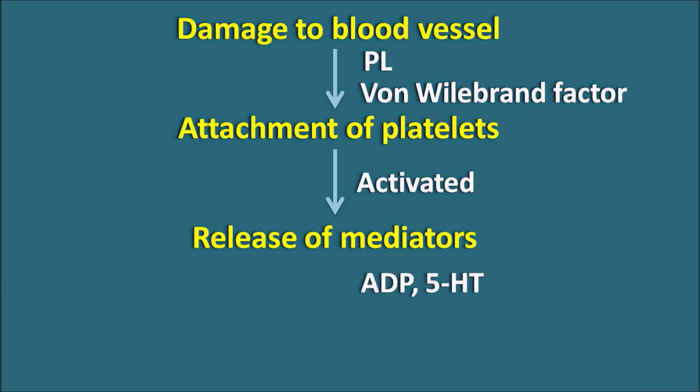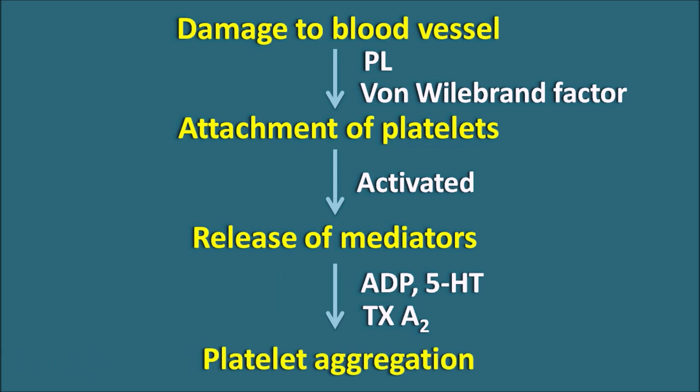The mediators released include ADP, adenosine diphosphate, as well as 5-HT. And mediators like thromboxane A2 are synthesized within the platelets. These mediators are released from the platelets and act on corresponding receptors on other platelets to produce platelet aggregation. So these are the three important steps: first is attachment, second is release of mediators, and third is platelet aggregation.